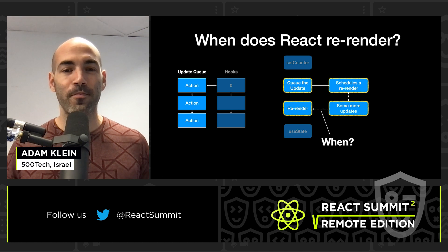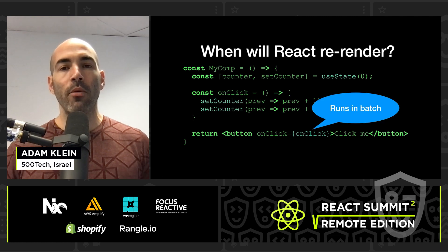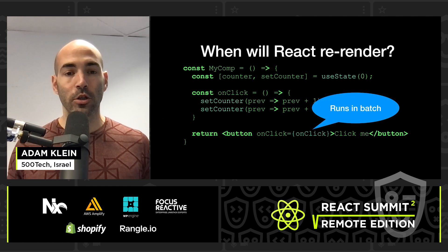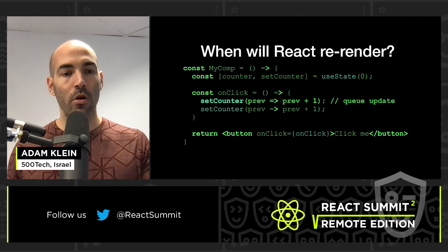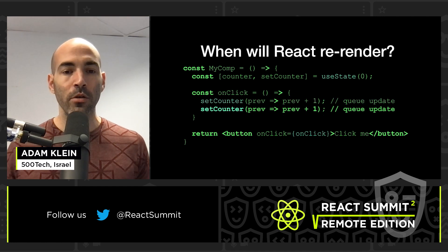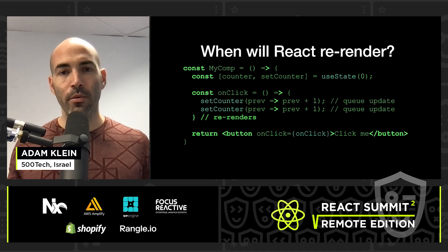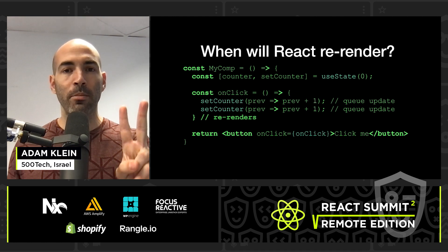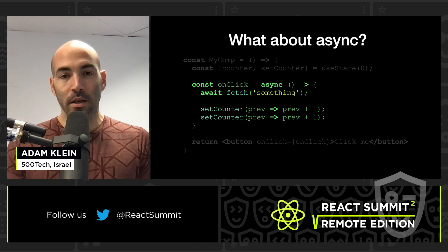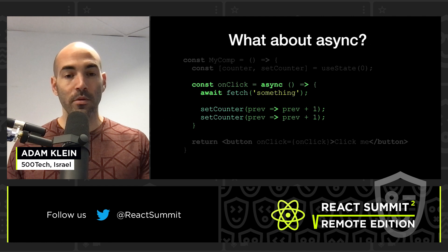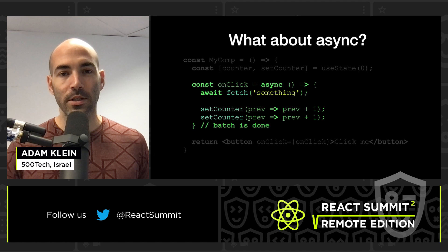When you have event handlers — for example onclick — React runs them inside something called a batch. Inside the batch, all of the updates are queued. In this case we have two calls to setCounter, both are queued, and when the function completes the batch is over and React re-renders. So we have two updates in the queue and only one re-render.